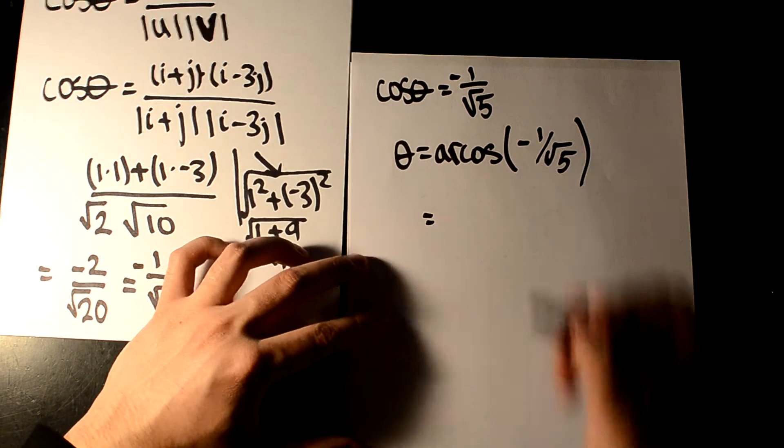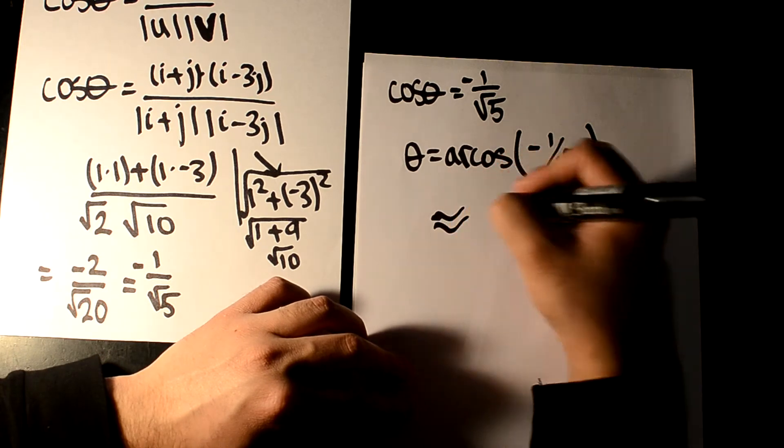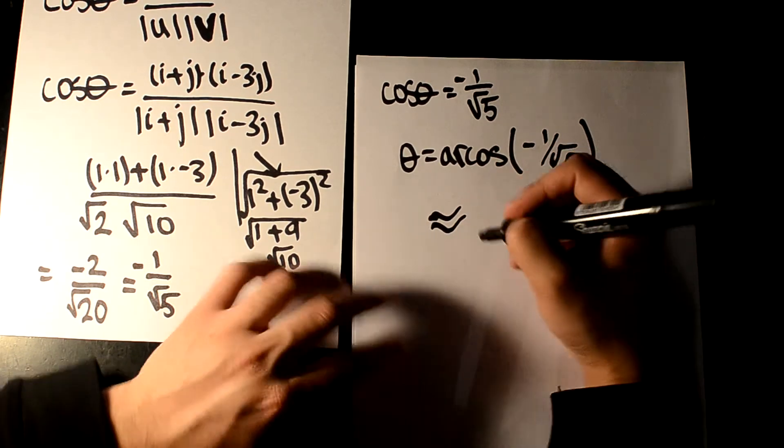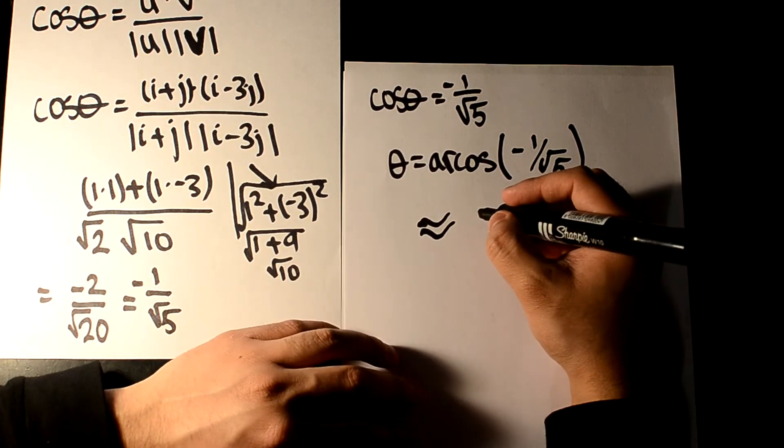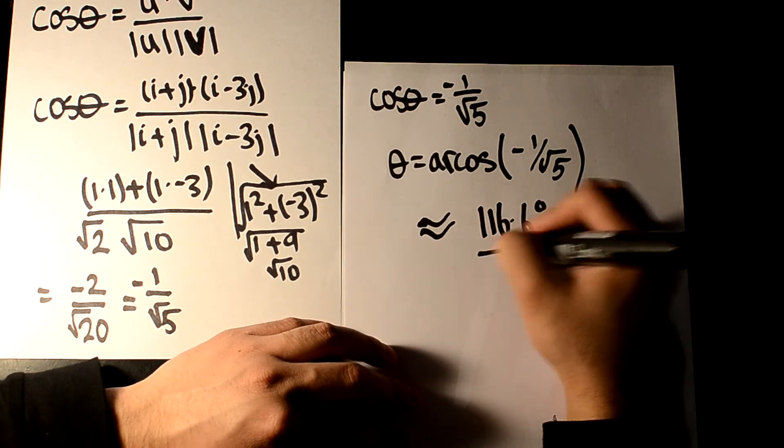So they might ask you to put that into radians or degrees, but we're going to be roughly, a little squiggly line, it will come to, if you plug it into your calculator, you should get theta to be 116.6 degrees.